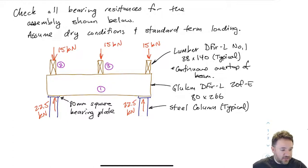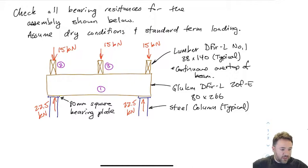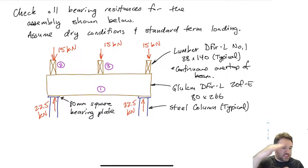This example looks similar to a previous video where we're looking at a beam with some joists bearing on top. I want to calculate every single resistance for compression perpendicular — that is, resistance for compression bearing for this entire assembly. I'm going to have a number of places to check for the glulam beam, identified as number one on the drawing. I need to check the bearing of the steel columns onto the beam, the bearing of the joists onto the beam.